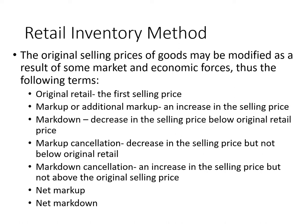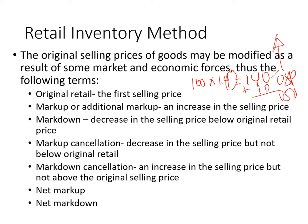Markup or additional markup is an increase in the selling price above the original selling price. For example, if the original selling price is 140 and you add 10, it becomes 150 — that 10 is the additional markup. Markdown is a decrease in the selling price below the original retail price. If the original retail price is 140 and you lower it to 120, the 20-peso difference is the markdown.